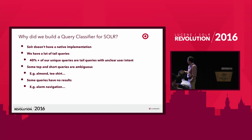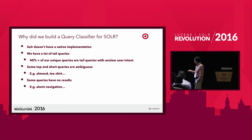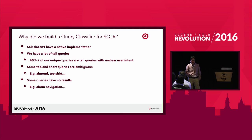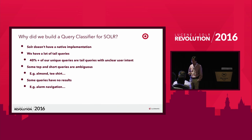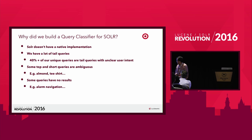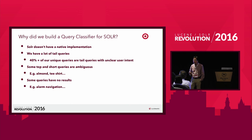The top two problems I showed you are ranking-specific problems — how to rank items to the top using the classifier. The last one is a recall problem. We have quite a lot of queries that return no results. Target is not like Amazon where they sell everything in the world. We are very selective, selling good items that give customers more for their money. So very often, because of our smaller selection, when someone enters a query, we have no results — and that's a recall problem we want to fix.